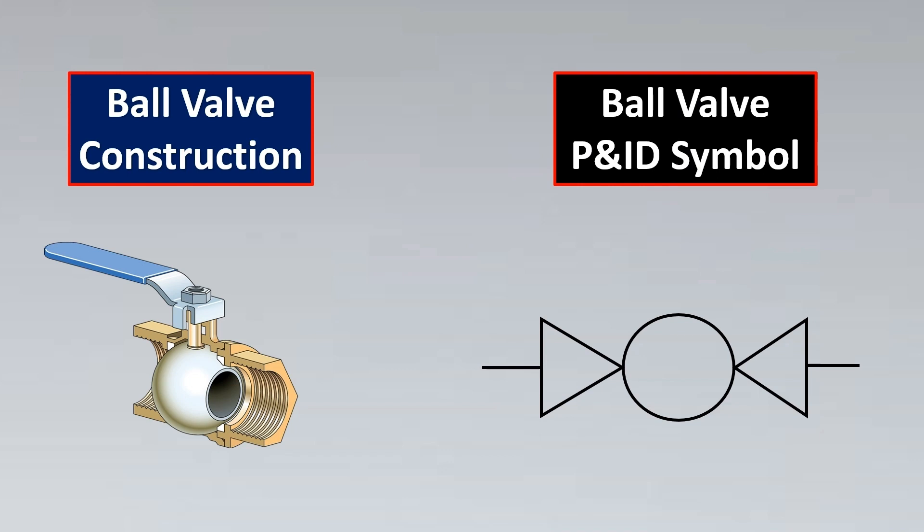However, in certain P&IDs the same ball valve symbol is shown differently. Even this alternate form stands for a ball valve symbol — even though it's not exactly as per ISA 5.1, it still represents a ball valve.